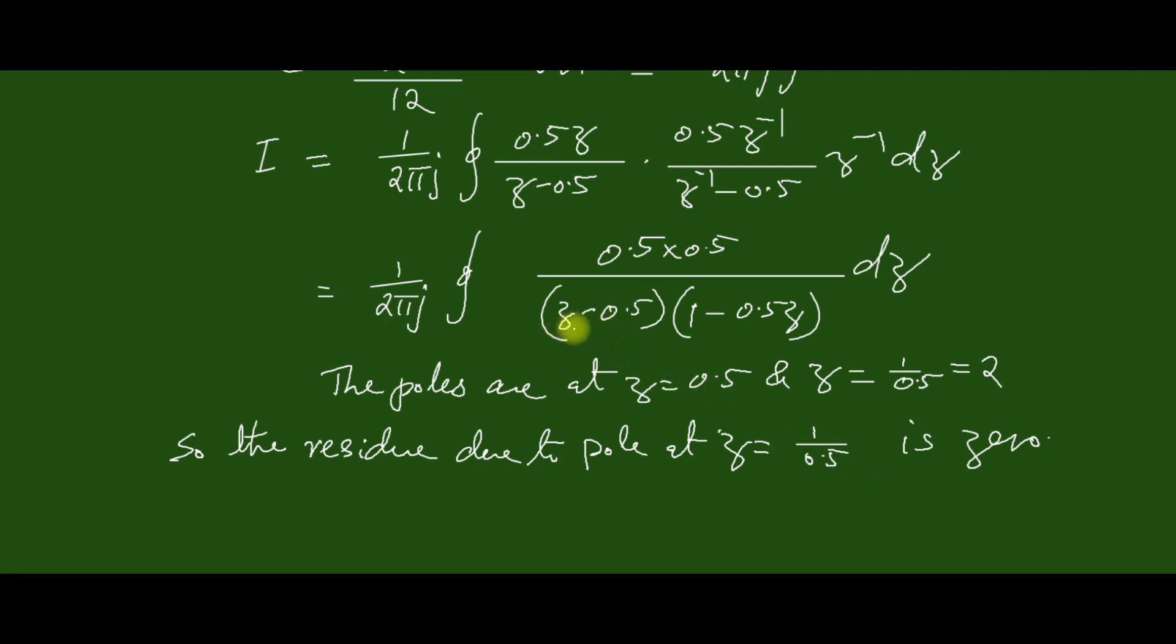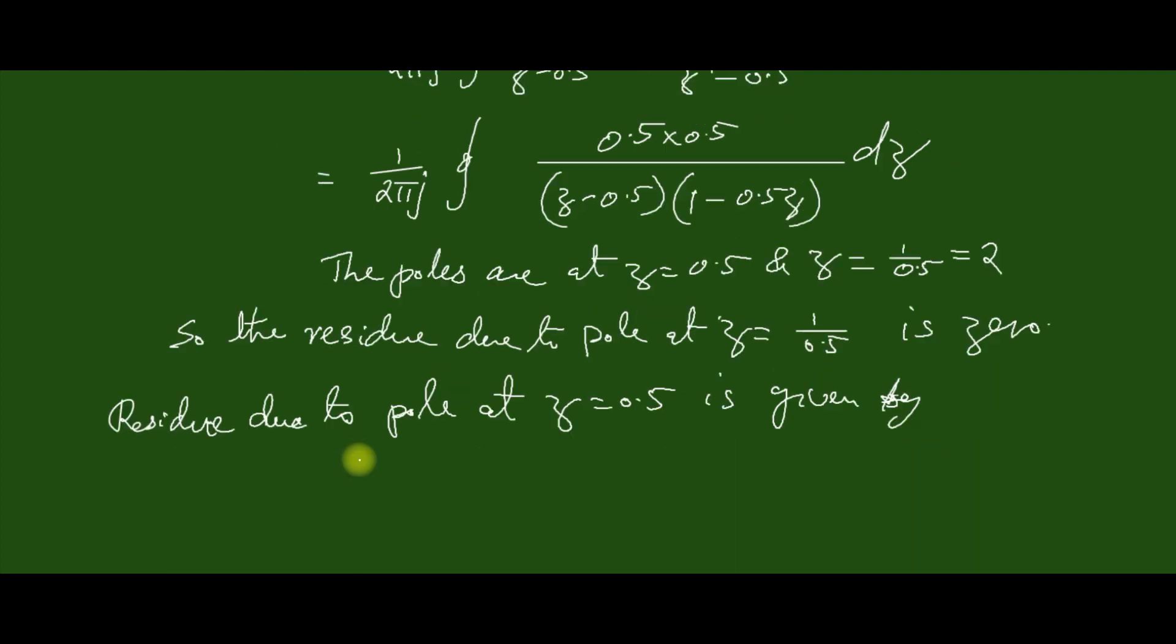Now we can compute only the residue due to the pole at point z=0.5. So the residue due to the pole at z=0.5 is given by assigning z=0.5 for this system function.